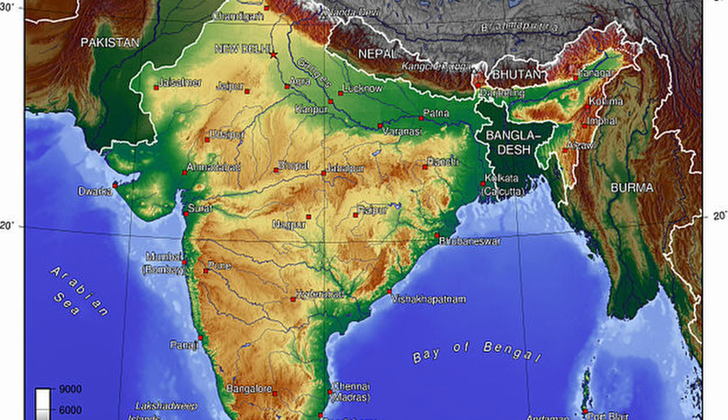Bounded by the Indian Ocean on the south, the Arabian Sea on the southwest, and the Bay of Bengal on the southeast, it shares land borders with Pakistan to the west, China, Nepal, and Bhutan to the northeast, and Bangladesh and Myanmar to the east. In the Indian Ocean, India is in the vicinity of Sri Lanka and the Maldives, while its Andaman and Nicobar Islands share a maritime border with Thailand and Indonesia.